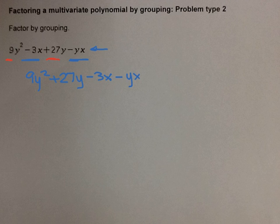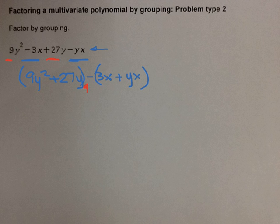Now I can start to group: my first two terms together and my second two together. But remember, I have a negative sign in between them, which means I need to change the sign of my second binomial.